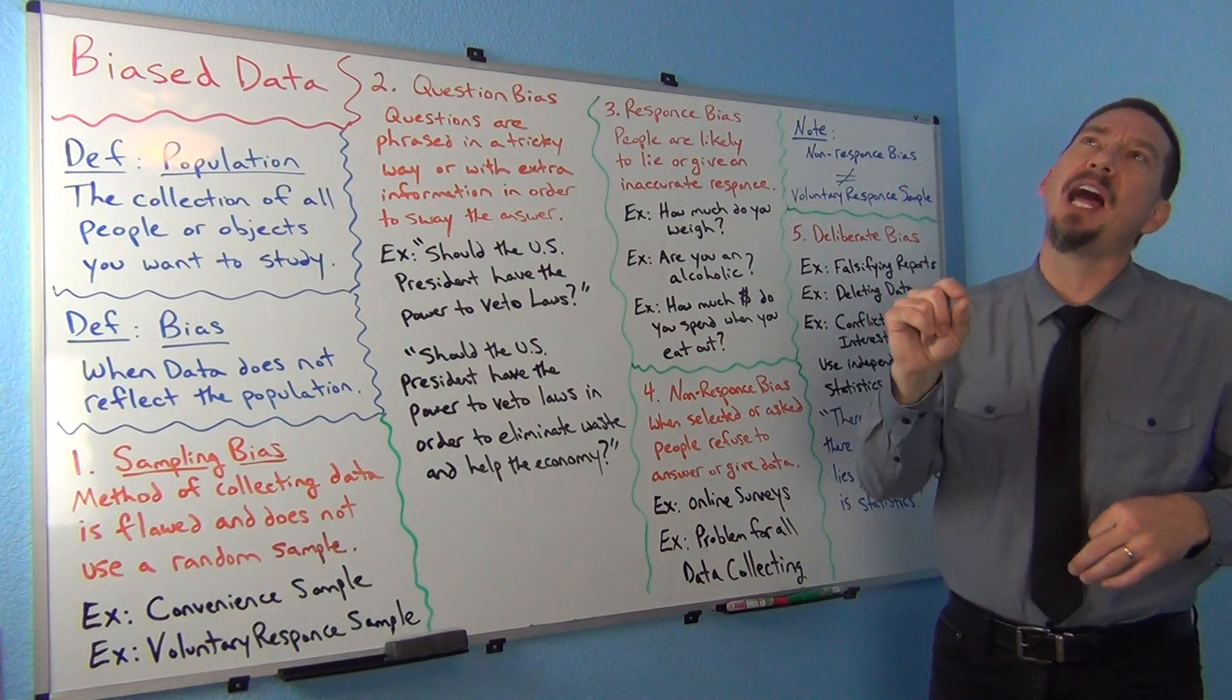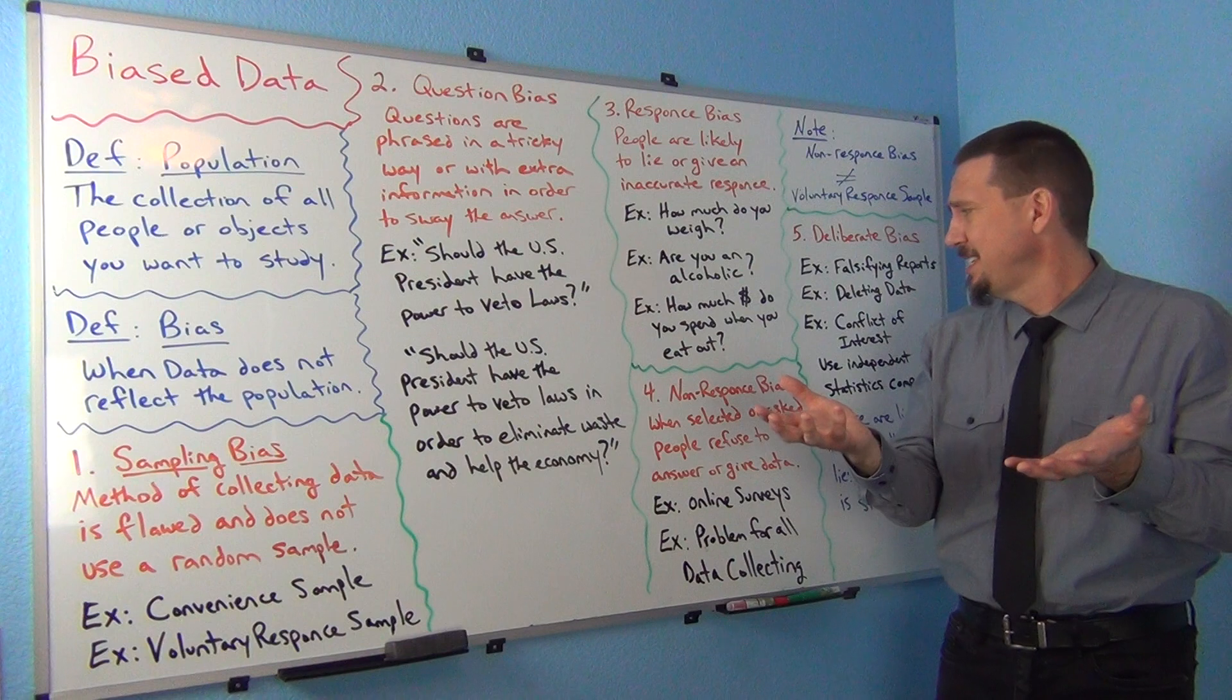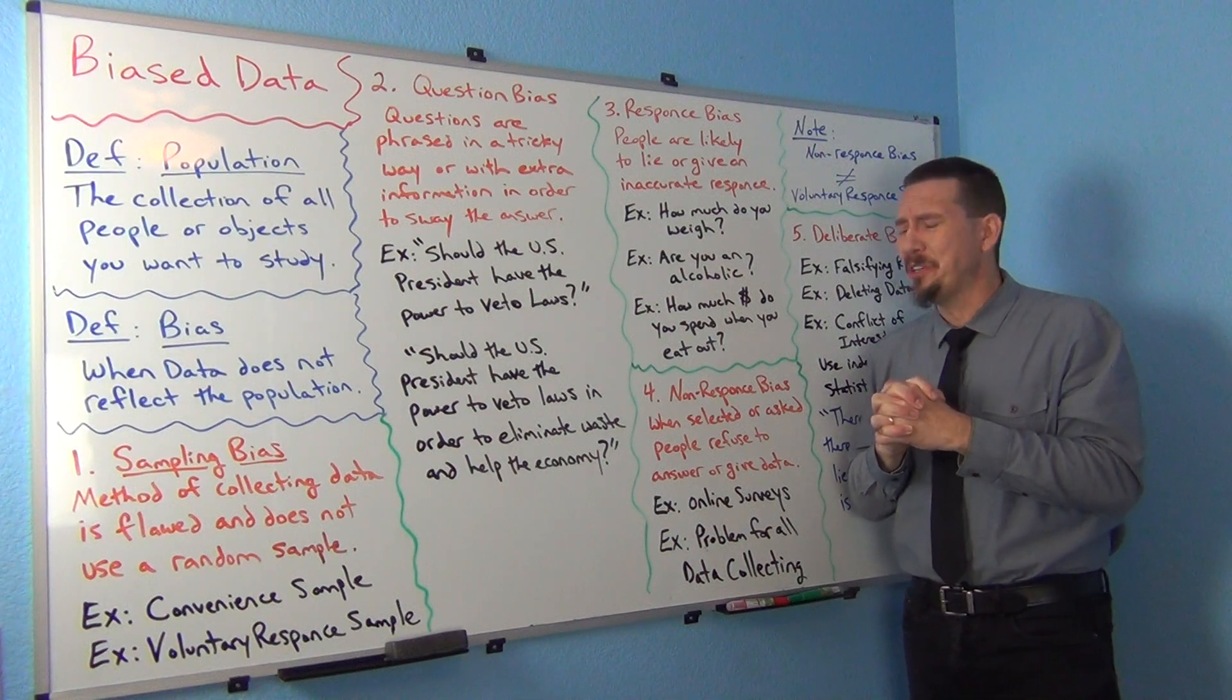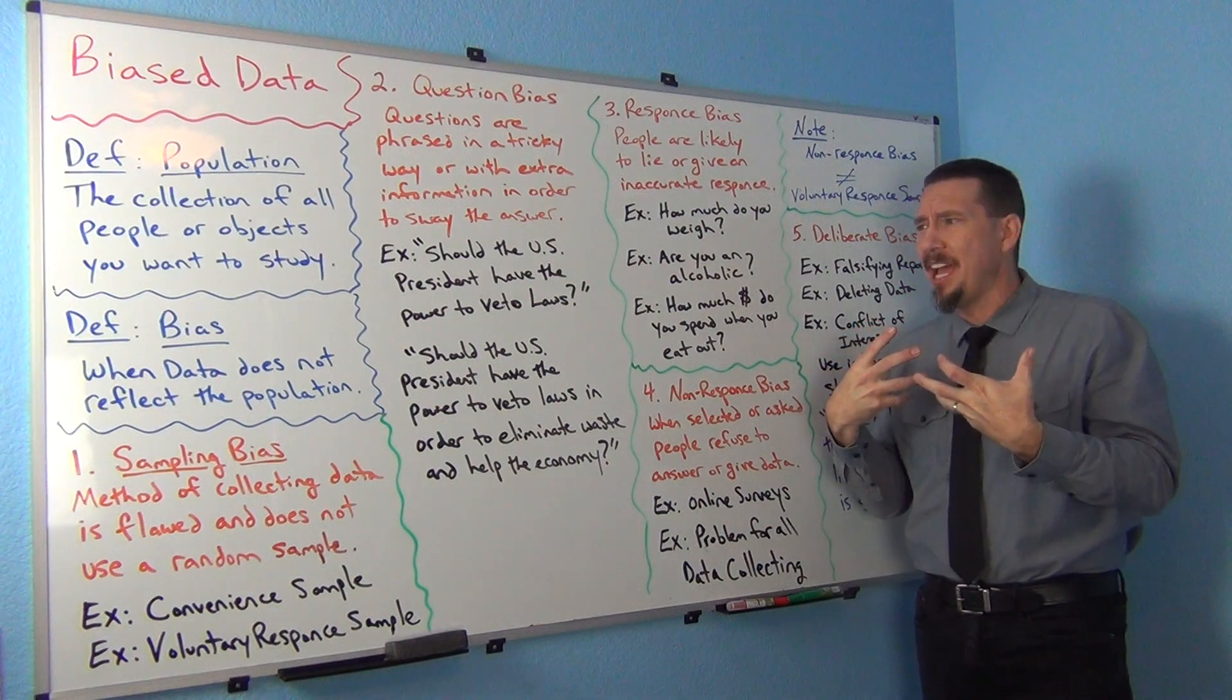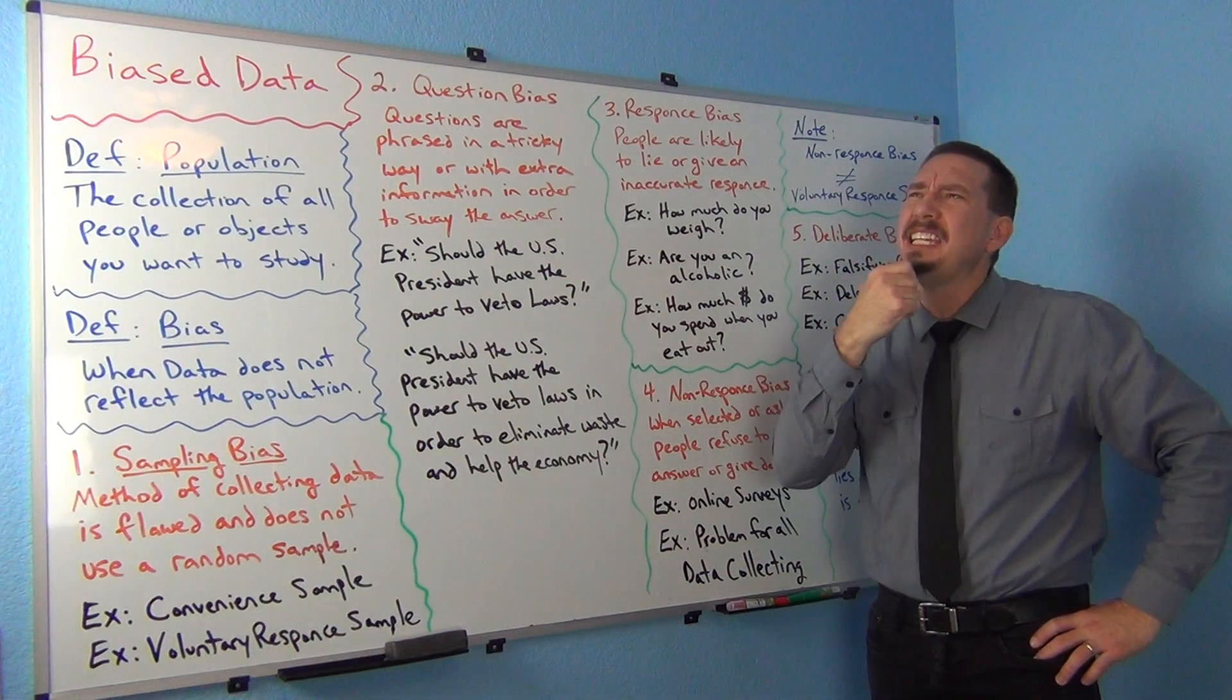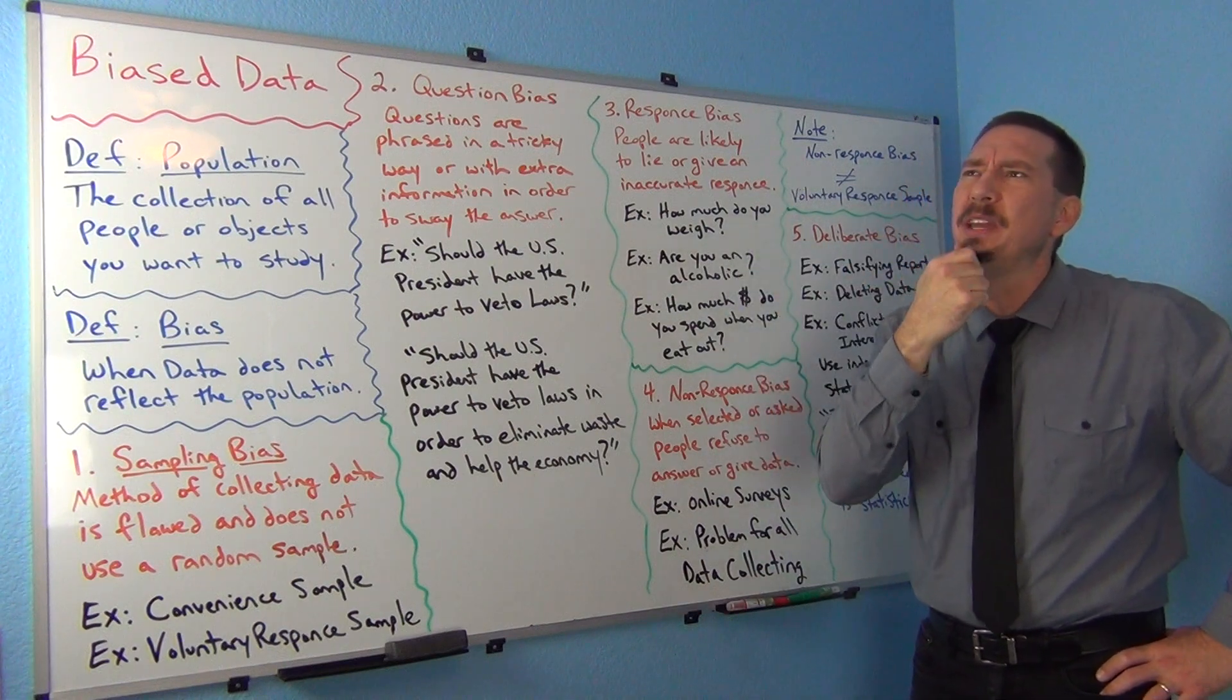But it can also, it doesn't have to be just lies. It could also be just the person doesn't know really. So they're estimating and it's not maybe a very accurate estimate. For example, if I walk up to someone and say, how much money do you spend when you eat out? Well, that's a really difficult question to answer accurately. I don't think I could even answer it very accurately. I could say, okay, well, I went out the other day and I spent $18. And then when I went out again, I spent $12. And after that, I spent, let's see, I went one, I think I spent $10.